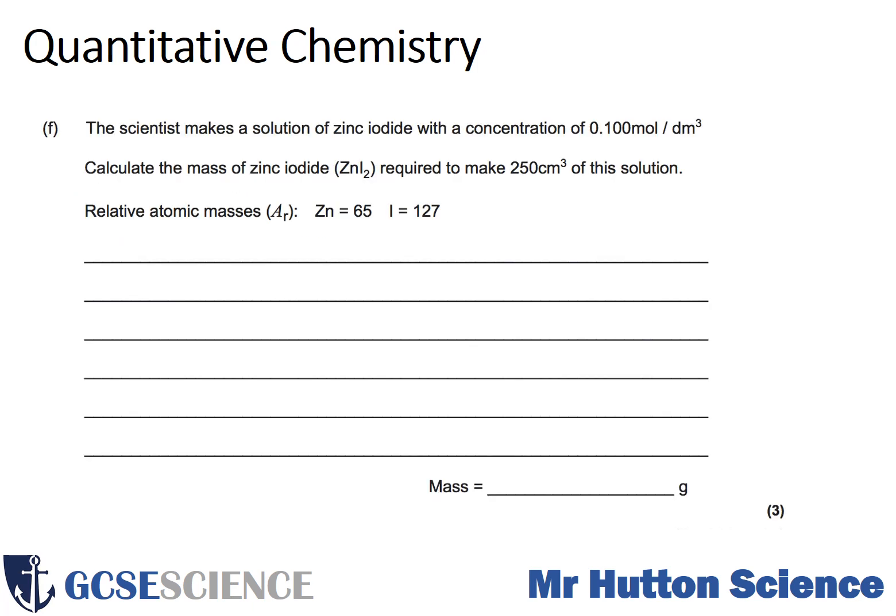The next question: a scientist makes a solution of zinc iodide with a concentration of 0.100 moles per decimeter cubed. You're asked to calculate the mass of zinc iodide required to make 250 centimeters cubed of this solution. The relative atomic masses are given so you don't need to look those up. You need to link mass, moles, and relative formula mass, and also consider the link between concentration per decimeter cubed and 250 centimeters cubed. Pause the video now and attempt the question.